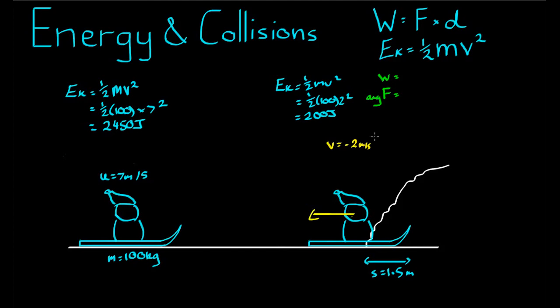And then an extra 200 joules worth of energy was done to accelerate him to negative 2 meters per second that way. So total work done is actually equal to 2450 joules worth of energy to bring him to a halt, plus 200 joules worth of energy to accelerate him in the opposite direction, which comes to a total of 2650 joules.